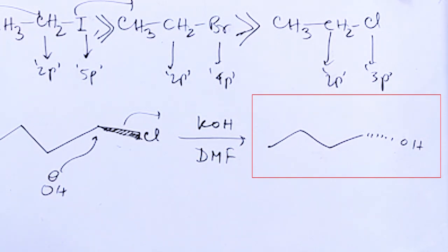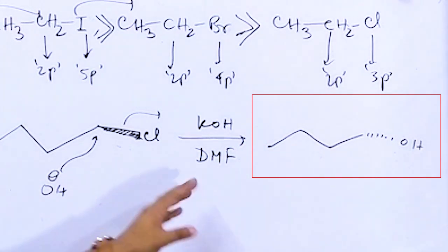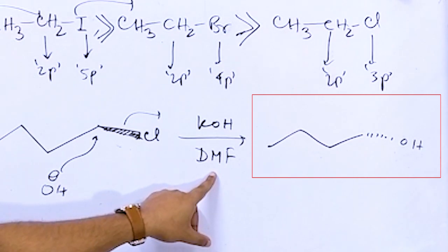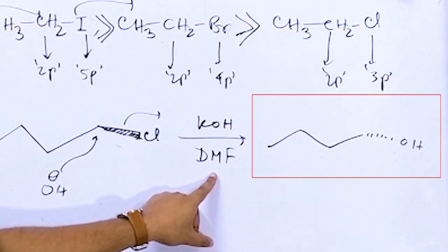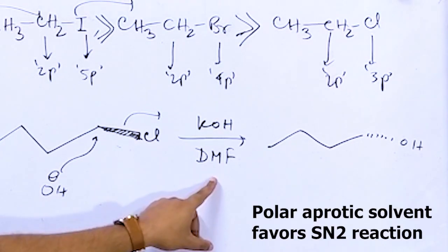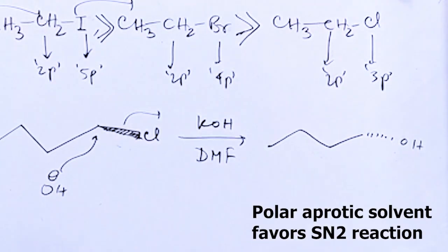To summarize: polar protic solvent favors SN1, and polar aprotic solvent favors SN2. That's how we determine the product in this case.